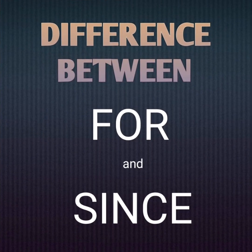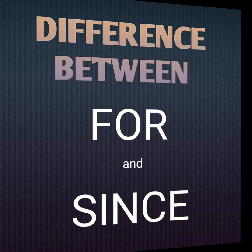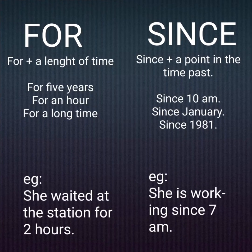Moving to the next set of confusing words: 'for' and 'since'. Understanding their difference is really important. 'For' is used for a length of time, whereas 'since' is used for a point in time. For example: 'for five years', 'for an hour', 'for a long time'; and for 'since': 'since 10 a.m.'